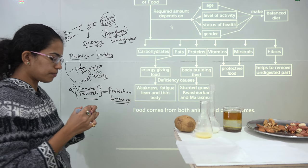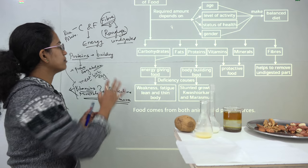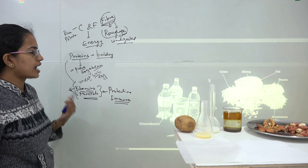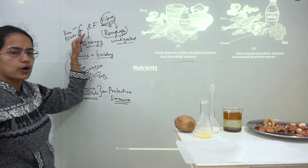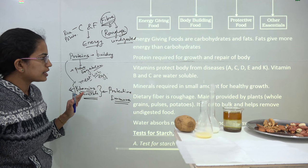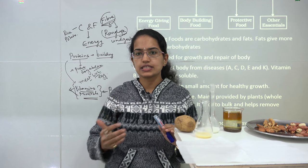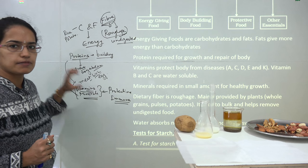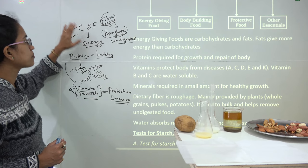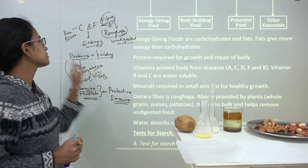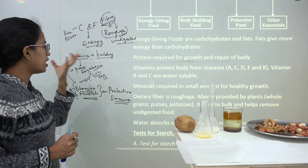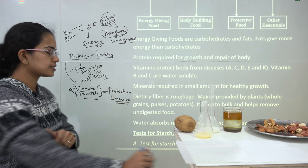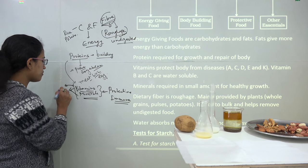We have talked about what all incorporates our diet. We have different tests to understand whether a component has a decent amount of carbohydrate or fat. To repeat: carbohydrates and fats provide energy, with fats providing more energy than carbohydrates. Proteins are the building blocks that help in growth. Vitamins and minerals are protective foods. Under vitamins, you have A, D, E, K — these are fat-soluble vitamins.